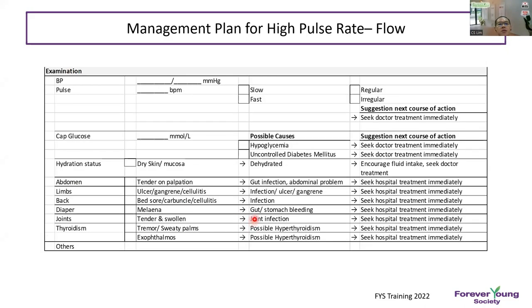On examination for high pulse rate, check blood pressure, blood sugar, and identify whether atrial fibrillation is present — elderly with sepsis may show AF. Check hydration status, inspect the abdomen and limbs for ongoing ulcer, gangrene, or cellulitis. Check the back for carbuncle or cellulitis, melena for gut bleeding, and joints for infection. Assess thyroid for tremor, sweaty palms, exophthalmos, or neck swelling suggesting hyperthyroidism.